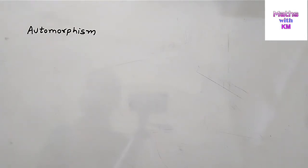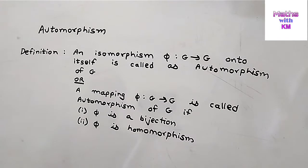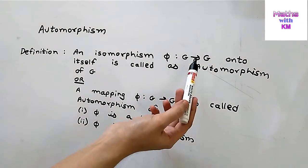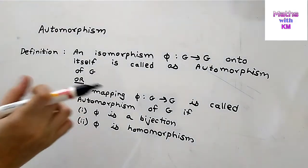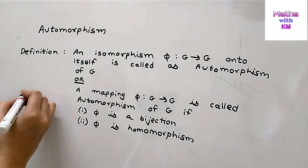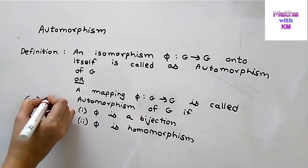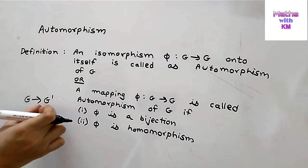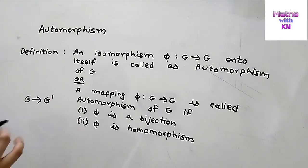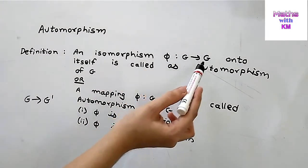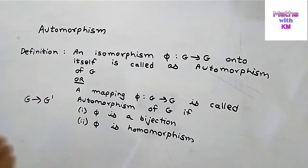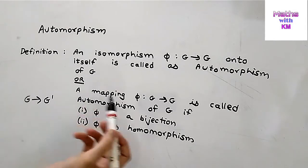Hey guys, welcome to my channel. In this video we are going to study about what is automorphism. An isomorphism phi which is a mapping from g to g onto itself is called an automorphism of g. In isomorphism the mapping was from g to g dash, where domain is g and codomain is g dash. But in automorphism the domain and codomain are both the same group g.